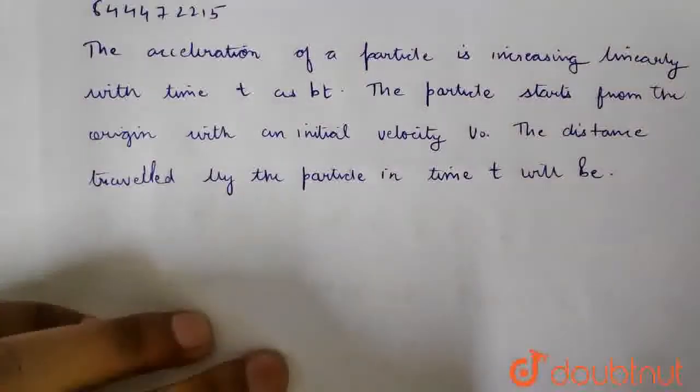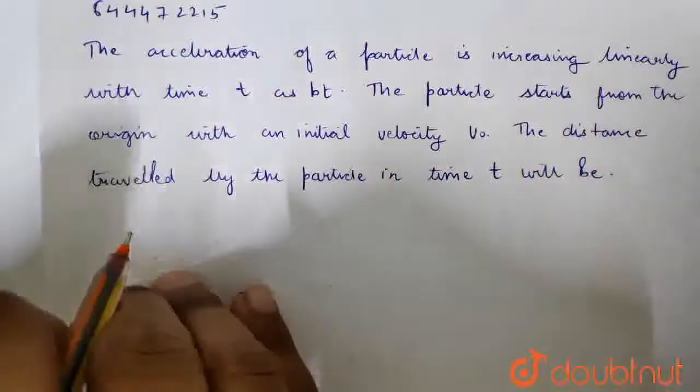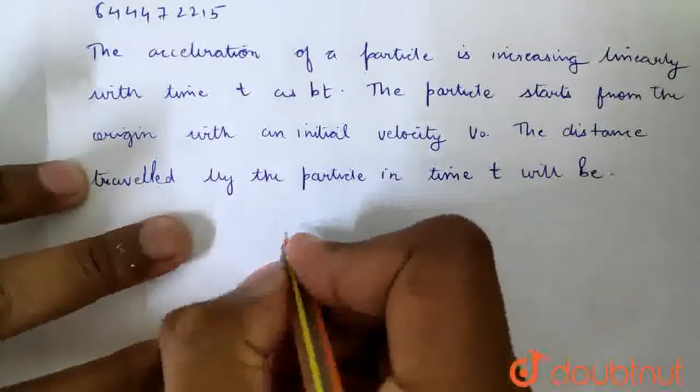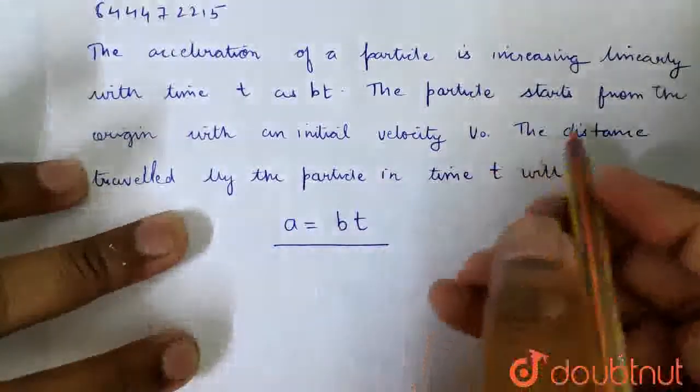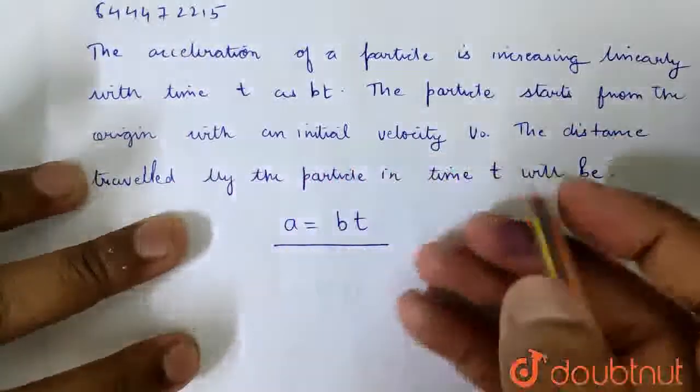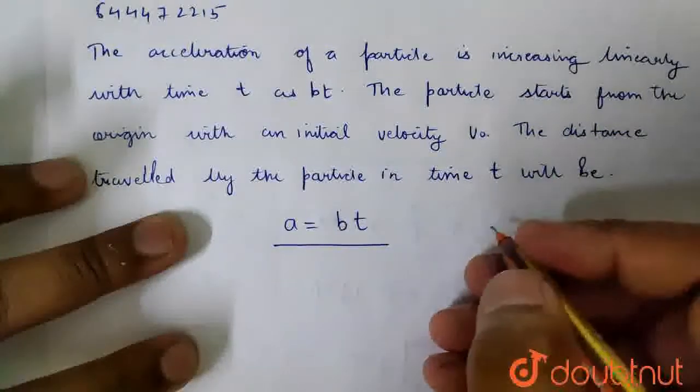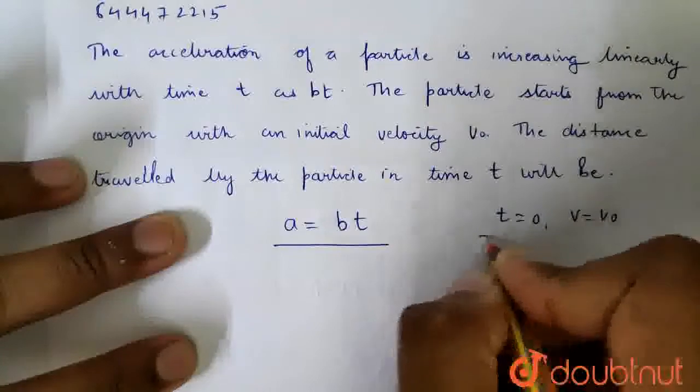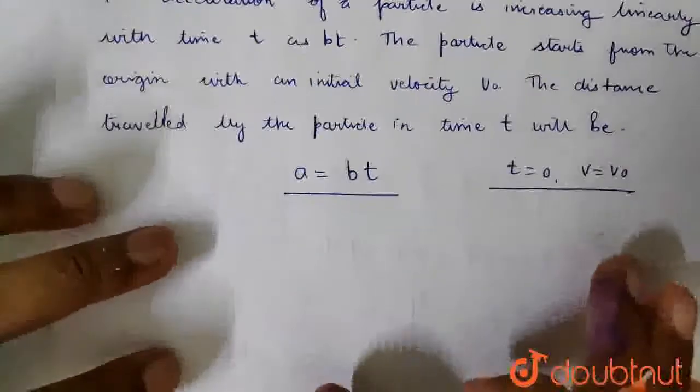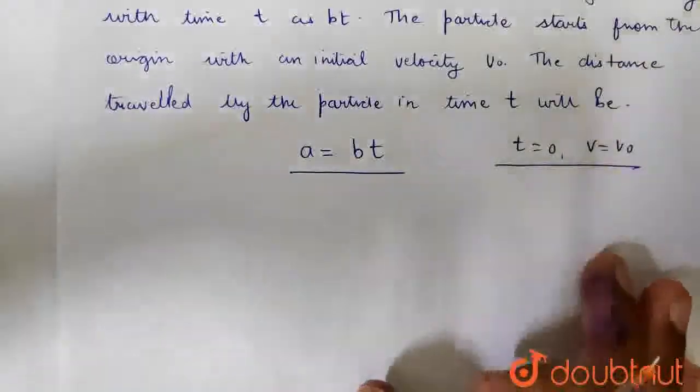The question is that the acceleration of a particle is increasing linearly with time t as bt. So what is given? Acceleration is equal to bt. The particle starts from the origin with an initial velocity v0. At t equals 0 seconds, the velocity v0 is given in the question. The question asks for the distance traveled by the particle at time t. Distance is a function of time.